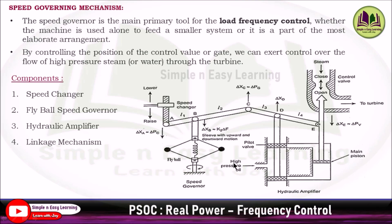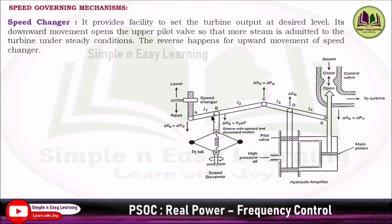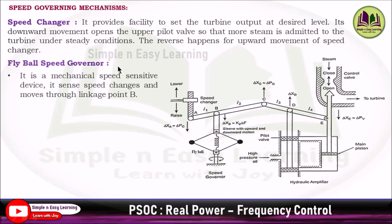The speed changer provides the facility to set up the turbine output at a desired level. Its downward movement opens the control valve so that more steam can be admitted to the turbine. Under steady state conditions, if the speed changer gives a raise command, the valve opens, more steam enters the turbine, and speed increases. In the upward movement, the control valve starts to close so that a minimum amount of steam enters the turbine, reducing the speed.